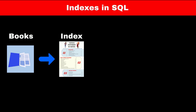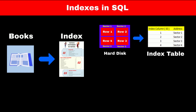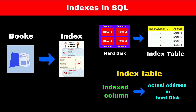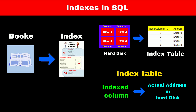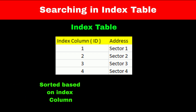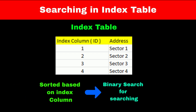Indexes in a book map the chapter to the page number. While in SQL, an index table maps the ID of a row, which is the index column, to the actual address or sector where the record is located on the hard disk. So instead of going through all the sectors of a hard disk, you can access the index table, which will give you the actual address of that record. Searching in an index table is also fast because it's sorted based on the index column, which allows us to use binary search, further improving the speed of the search operation.